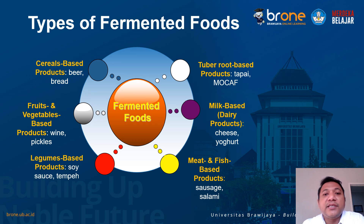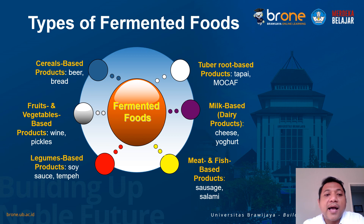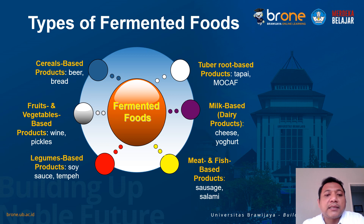Jenis-jenisnya ada banyak sekali. Ada yang berbasis sereal, misalkan bir dan bread. Kemudian berbasis umbi-umbian, ada tape dan mokaf. Berbasis buah-buahan dan sayur, ada wine dan pickle. Berbasis susu, ada keju dan yoghurt. Berbasis daging dan ikan, ada sosis dan salami. Dan berbasis kacang-kacangan, ada tempe dan kecap.